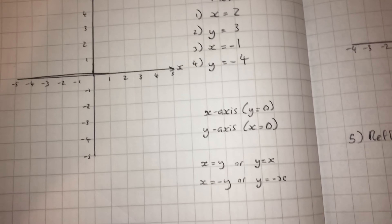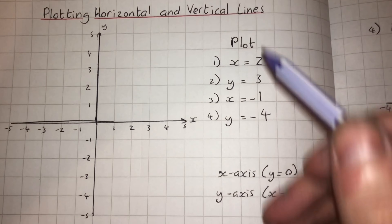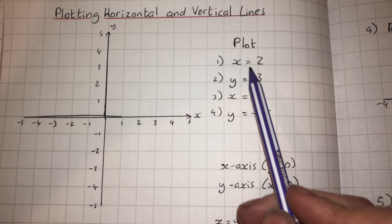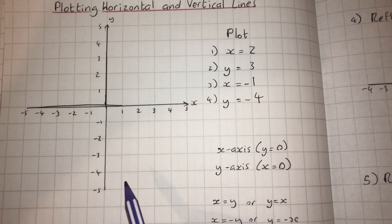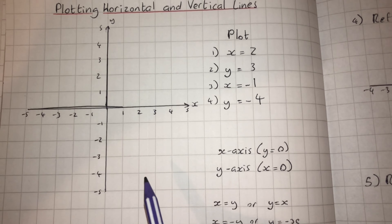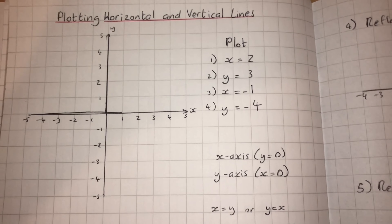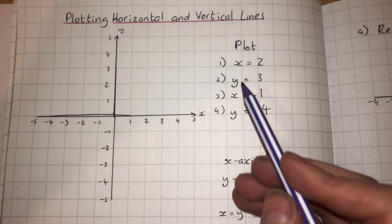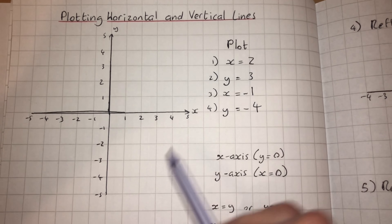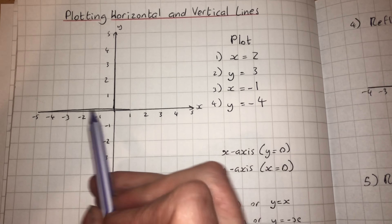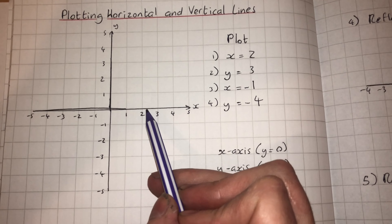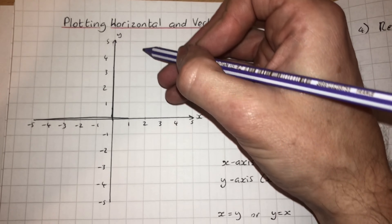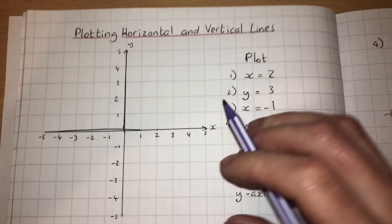There is a previous video on how to do this but we'll go through it quickly. We're going to plot lines such as x equals 2, y equals 3, and so on. If we're given an x-y axis and asked to plot the line x equals 2, make sure for any of these questions involving drawing on a grid that you use a pencil. When drawing x equals 2, we go to the x-axis — the axis that goes across — find where x is 2, and draw a line perpendicular to that axis.